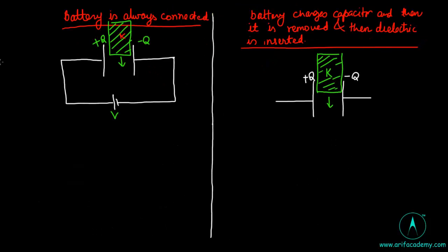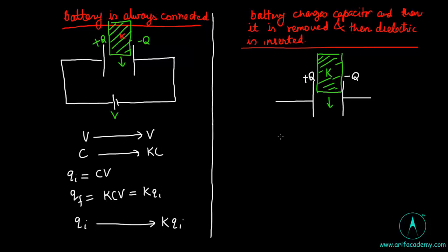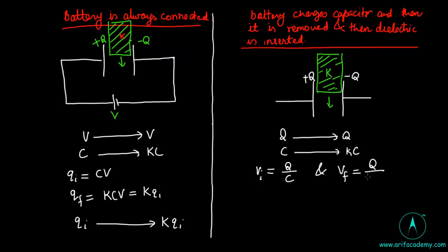In the left case, since voltage is the same and capacitance becomes k times more, the initial charge Q_i equals CV, so the final charge Q_f will also be k times more. In the right case, charge is the same but capacitance becomes k times more, so the voltage V_i equals Q over C and V_f equals Q over kC, meaning voltage becomes k times less.